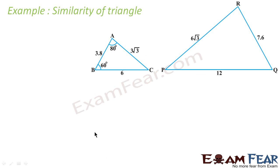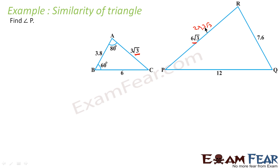Let us take one more example. We have to find angle P. First, we need to check whether the triangles are similar. If you observe: one side is 3 root 3 and another is 6 root 3, which is 2 times 3 root 3. One side is 3.8 and another is 7.6, which is 2 times 3.8. One side is 6 and another is 12, which is 2 times 6.